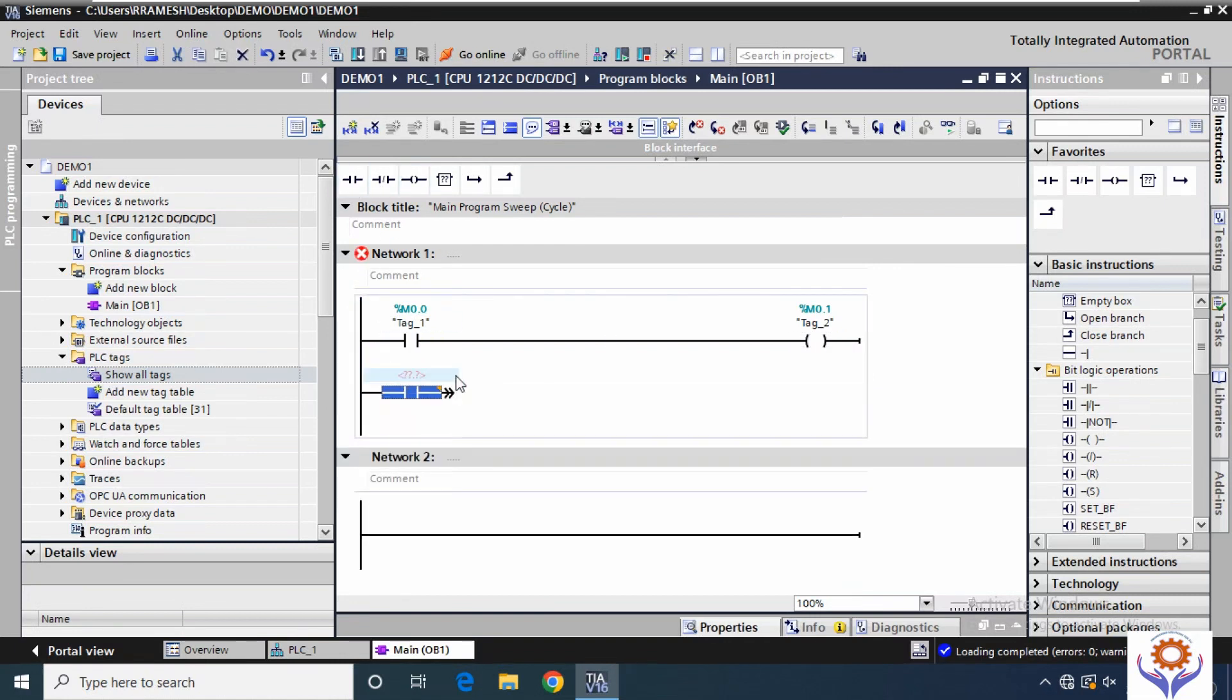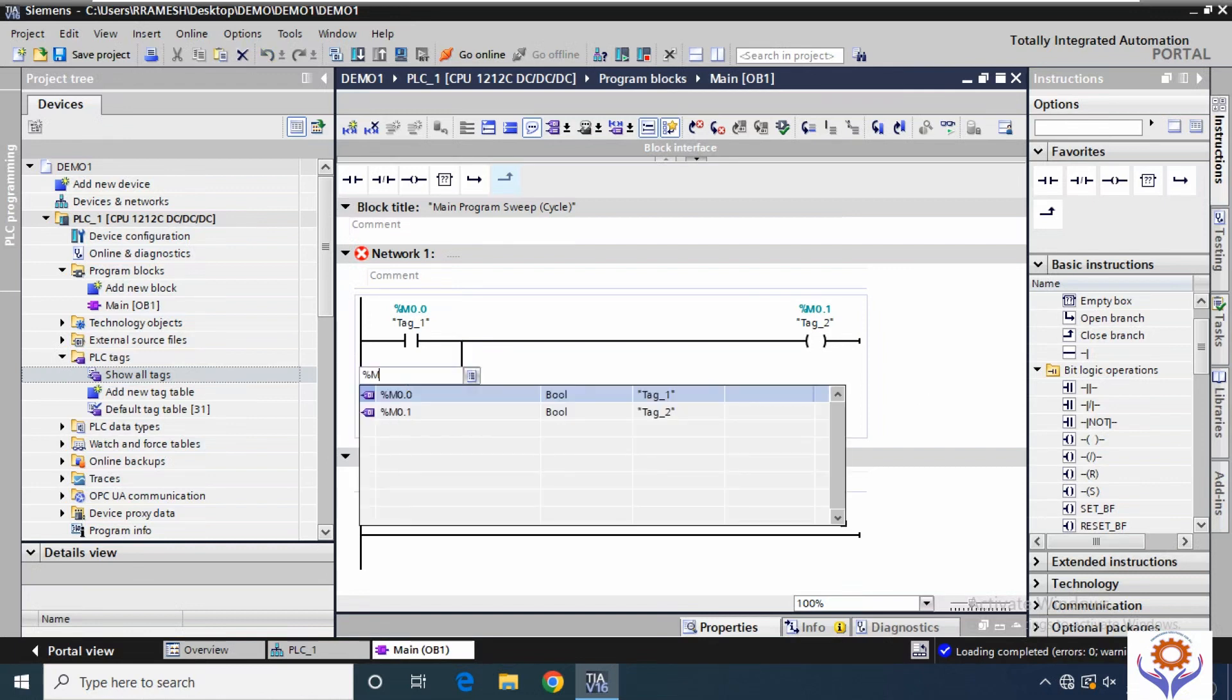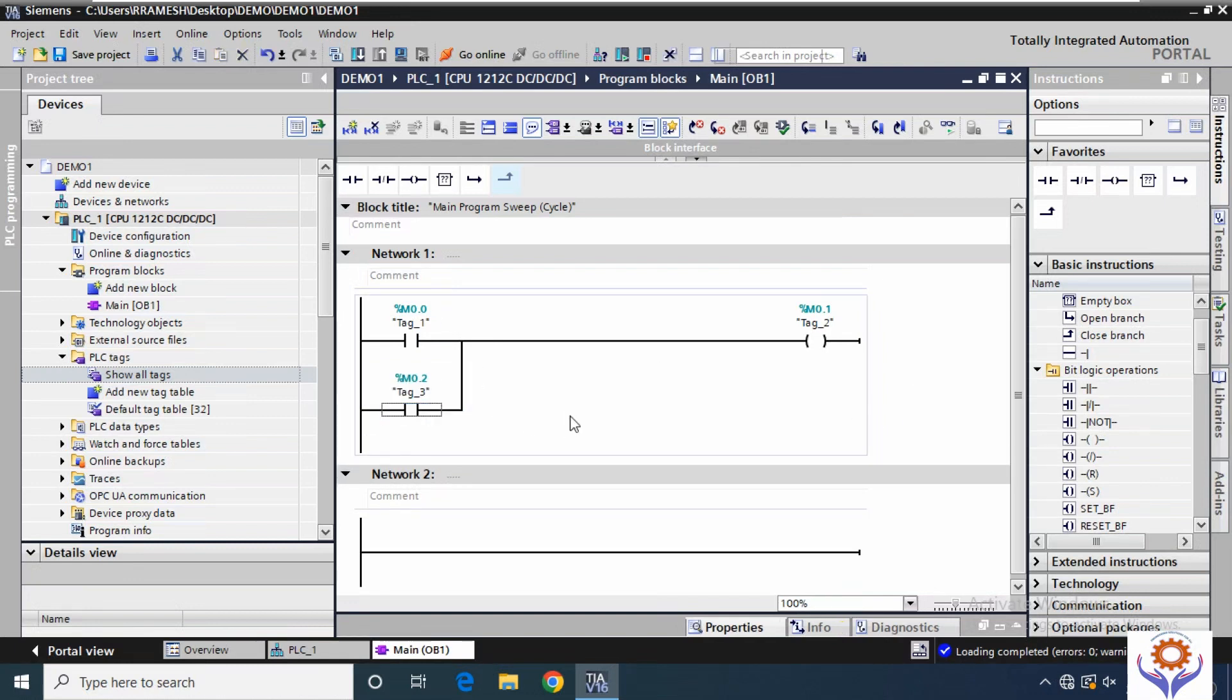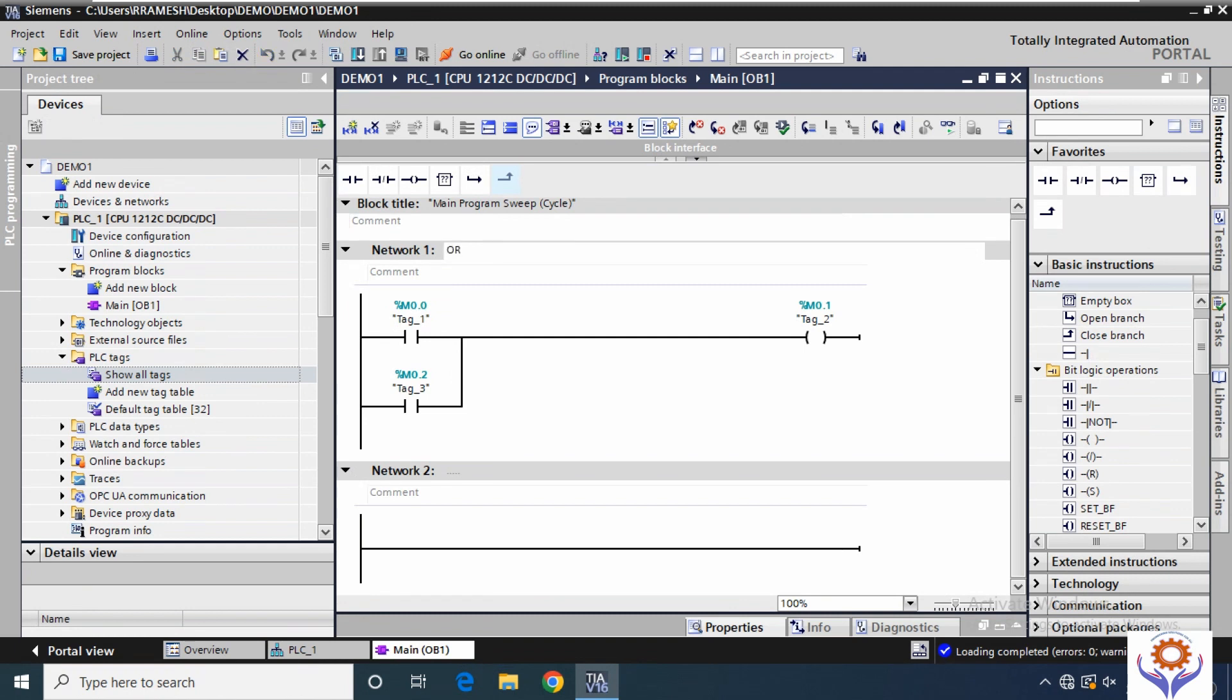Let us try for OR gates. Both inputs should be connected in parallel. So I can add the second input in parallel along with the first input and named as %M0.2. Then we named as OR logic.